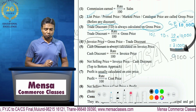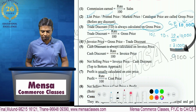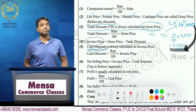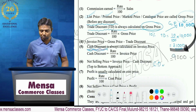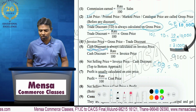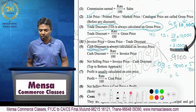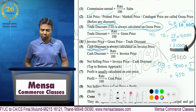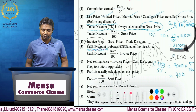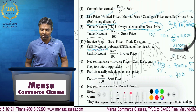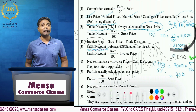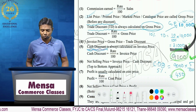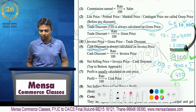Us ke baad kya karna hai? Phir hum calculate karte hai something called as cash discount. Suppose cash discount is 5%. So, 9,000 pe 5% karo — that comes to 450 rupees. Yeh 450 rupees hum kis se minus karenge? Very logical — yeh 10,000 se nahi karna hai. Ham ne calculate kia 9,000 pe, toh subtract bhi 9,000 se hoga. So, 9,000 minus 450 is 8,550.